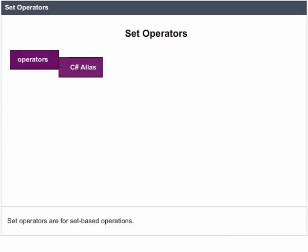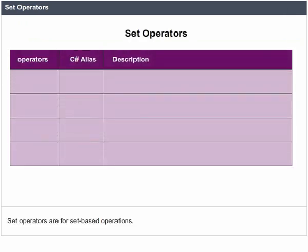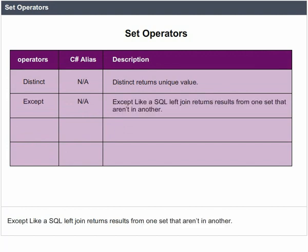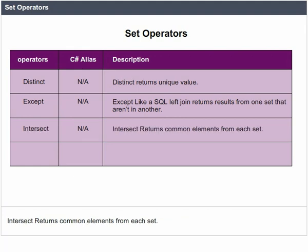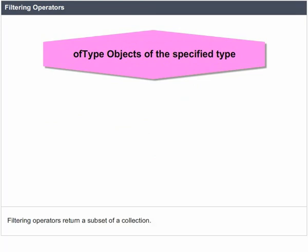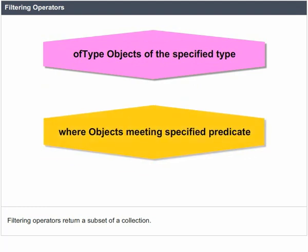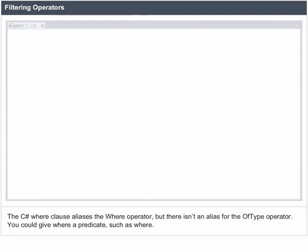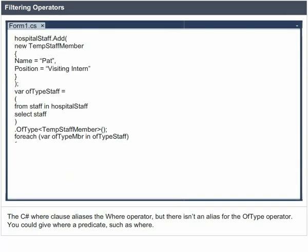You've already seen OrderBy and Descending operators used with C-Sharp syntax. The following example shows how to use a Reverse operator. Set Operators are for set-based operations: Distinct returns unique values; Except, like SQL left-join, returns results from one set that aren't in another; Intersect returns common elements from each set; Union returns all objects from both sets. Filtering Operators return a subset of a collection: OfType returns objects of the specified type; Where returns objects meeting the specified predicate. The C-Sharp where clause aliases the Where operator, but there isn't an alias for the OfType operator.